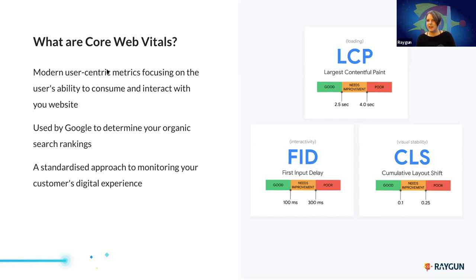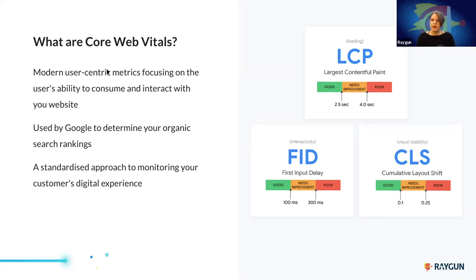The three metrics are: Largest Contentful Paint, which is probably the easiest to wrap your head around — we already have first paint and first contentful paint, and LCP is the next logical step. From a user's point of view, it's about when does a website seem almost ready? When can I start reading an article while the rest of the content loads in the background? First Input Delay is about interactions — when can I do something with a website? It includes things like navigation menus, clicking buttons, putting text into a field.